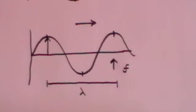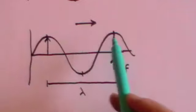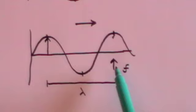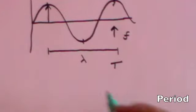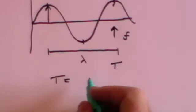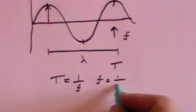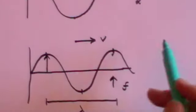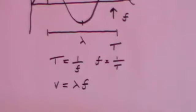Frequency is measured in cycles per second, or waves per second, or we use the term hertz. The time taken for just one wave to pass a particular point is called the period of the wave. The period and the frequency are related: the period is 1 over f, or equivalently f is equal to 1 over T. And finally, if the wave is travelling at a velocity v, then the velocity v is equal to the wavelength times the frequency.